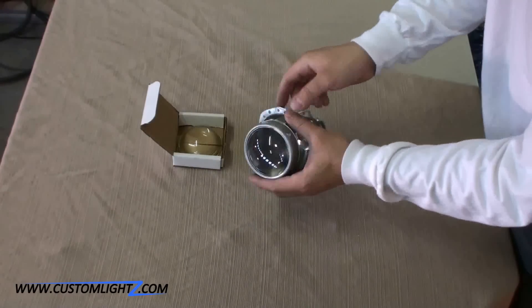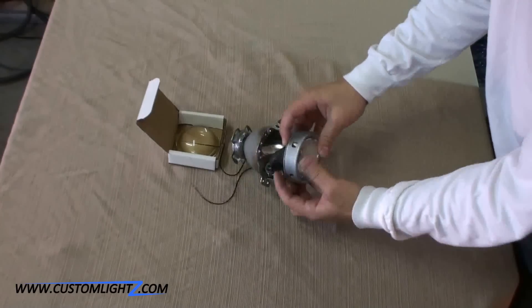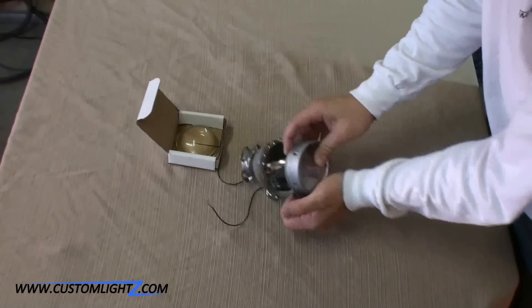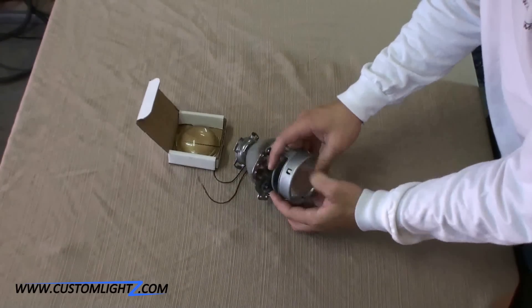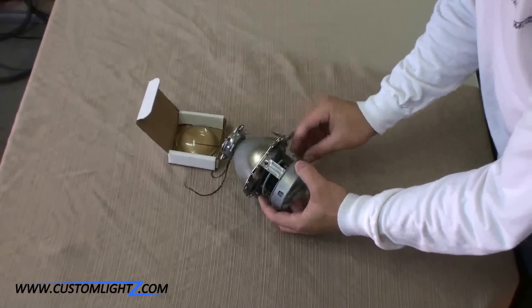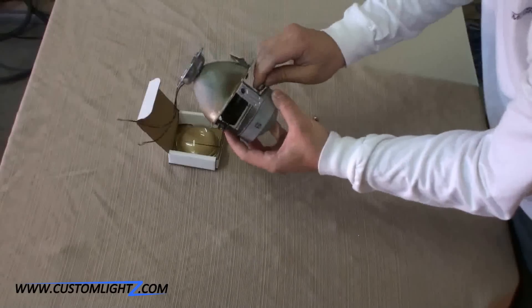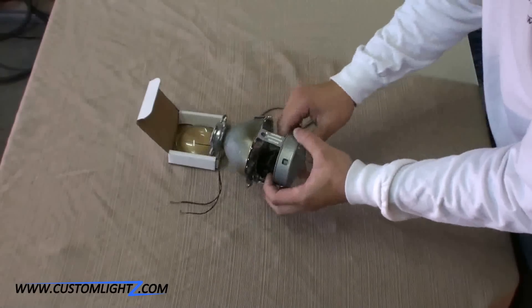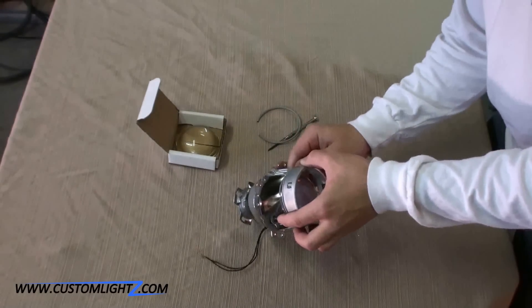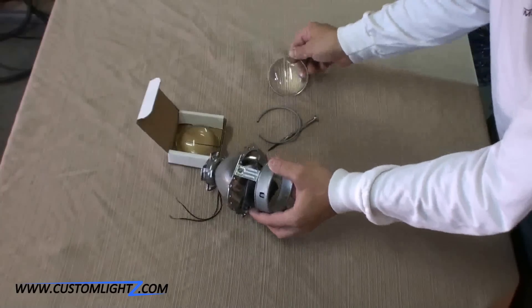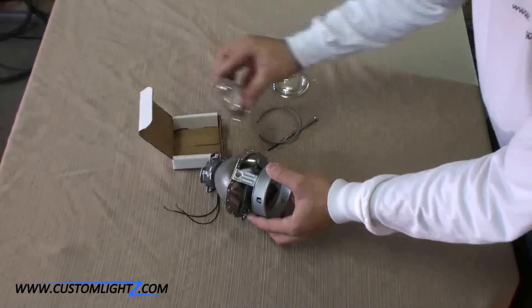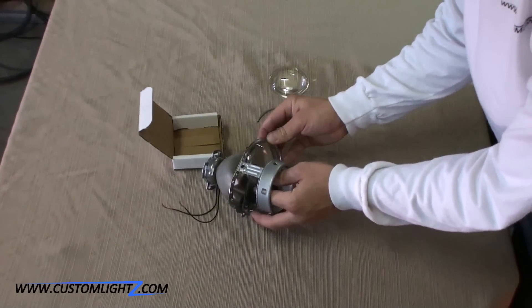So once all these tabs have been lifted, I like to gently push on the lens and the retainer ring should come out. Just slide the lens out. Put the new clear lens in there.